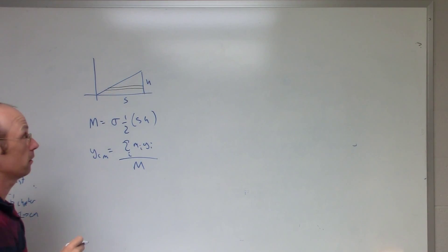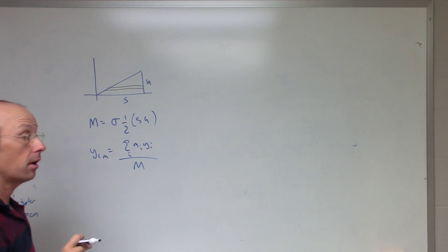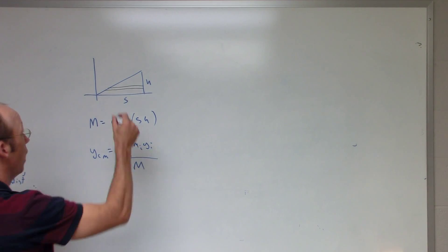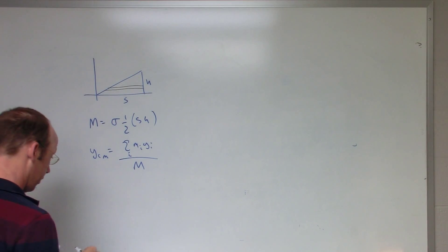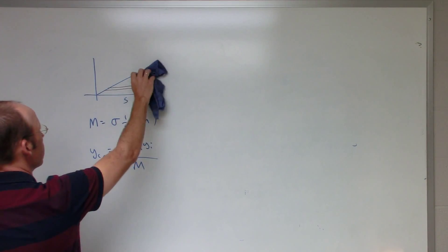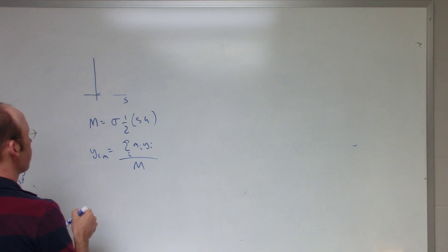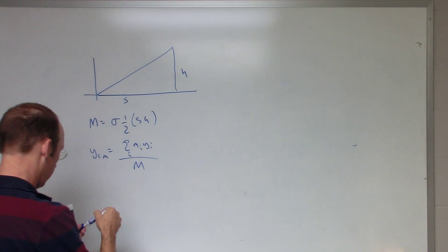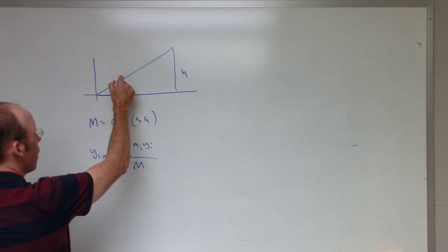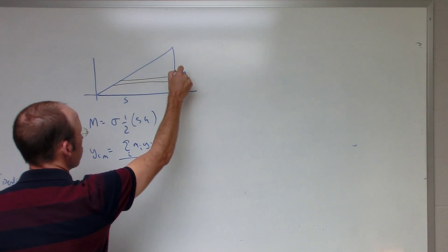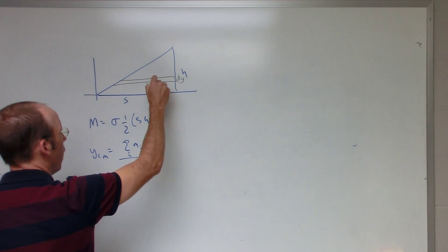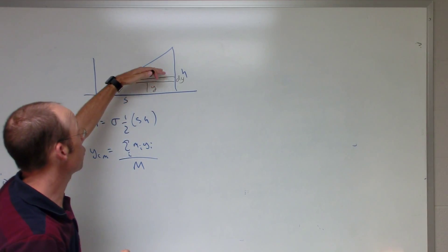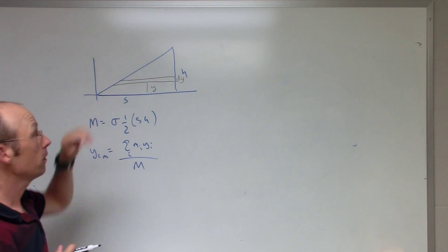Instead, since I'm just looking at the y-center of mass, I can break this into small horizontal strips. In each strip, the y-center of mass is at the center of the strip. I'll redraw it a bit bigger. Here's my triangle — each strip has a thickness of dy and is at height y. So instead of summing in two dimensions, I can just add up all these strips.